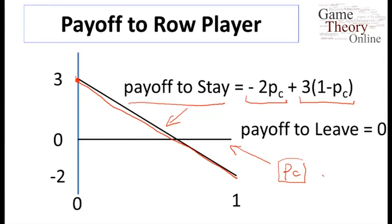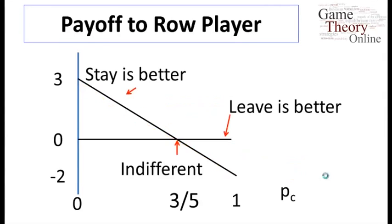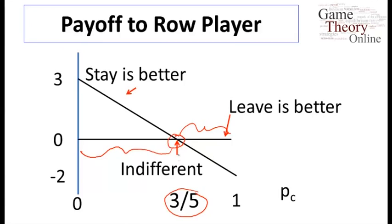We end up with stay being the better strategy if pc is less than or equal to three-fifths, leave being better if pc is bigger than three-fifths, and exact indifference when pc is exactly equal to three-fifths. So in terms of best response, when pc is less than three-fifths they'd rather stay, and when pc is greater than three-fifths they'd rather leave.